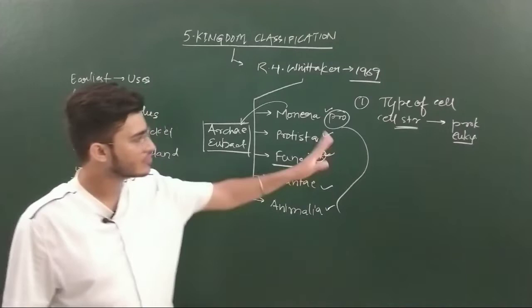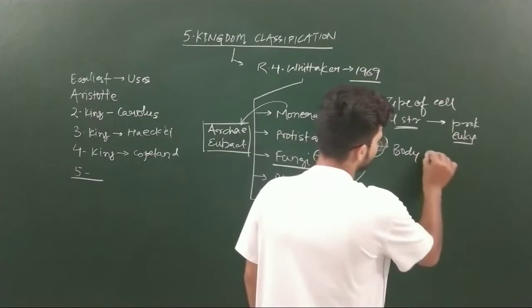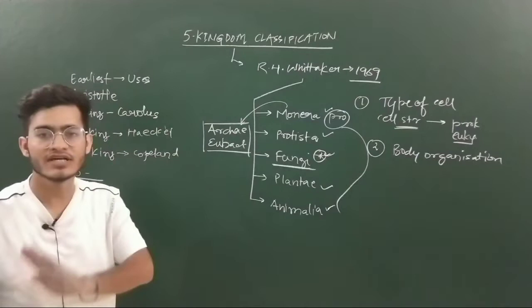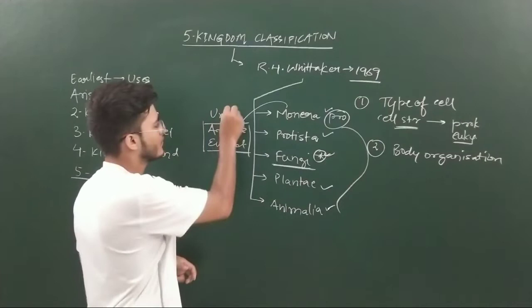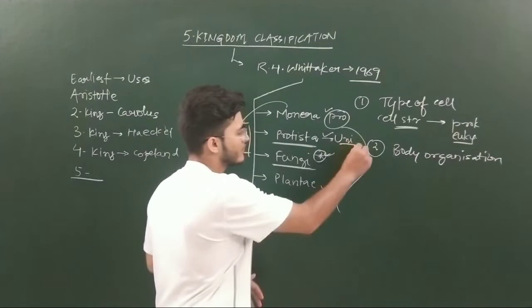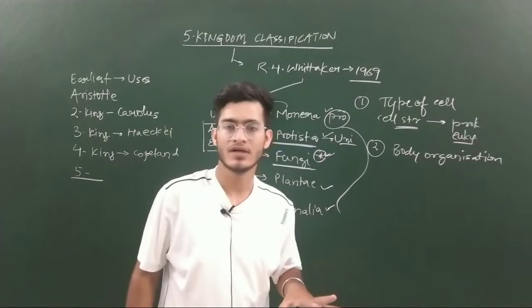The second character is body organization, whether the cell is unicellular or multicellular in nature. Monera are unicellular prokaryotes. Protista is more developed than Monera - here all the unicellular eukaryotes are part of Protista, so they were also unicellular.